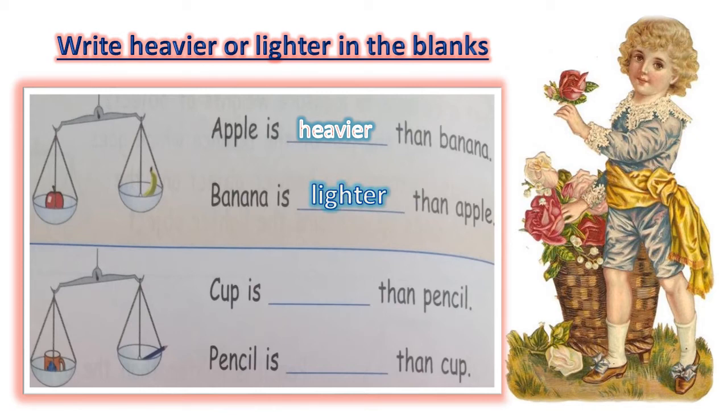The next picture, see the second picture. Cup is dash than pencil. And, pencil is dash than cup. The balance shows us, that is, pan of the cup is down. And, pan of the pencil is up. So, cup is heavier than pencil.